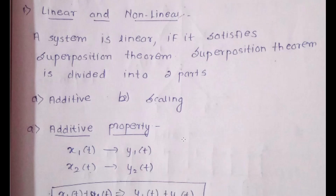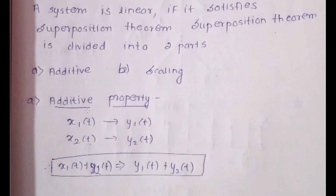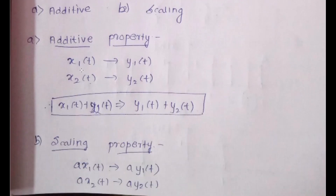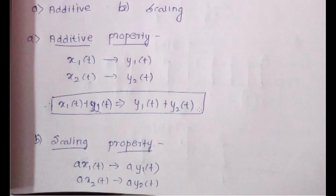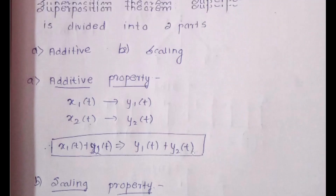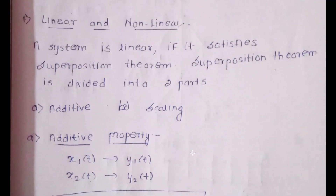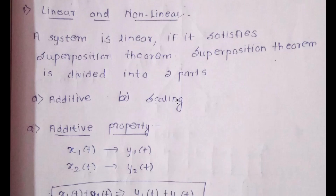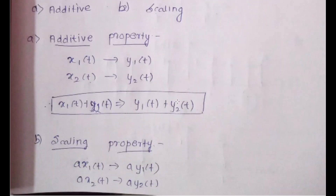First is the linear and non-linear system. A system is said to be linear if it satisfies the superposition theorem, which has two parts. The additive property: x₁(t) gives y₁(t) and x₂(t) gives y₂(t); add the two equations. The scaling property: a·x₁(t) gives a·y₁(t) and a·x₂(t) gives a·y₂(t). A linear system satisfies both properties; a non-linear system does not.